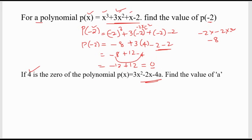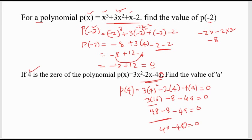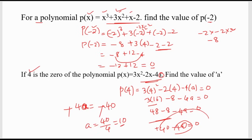If 4 is the zero of the polynomial, find A. Since 4 is the zero, replace x with 4 and equate to 0. So: 4 cubed plus 3 into 4 squared minus 4A equals 0. 4 cubed is 64 — wait, 3 into 4 square is 3 into 16 is 48. Minus 4A equals 0. 48 minus 8 minus 4A equals 0. 40 minus 4A equals 0. A equals 40 by 4, which is 10. So A value is 10.